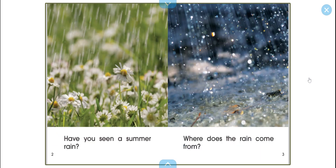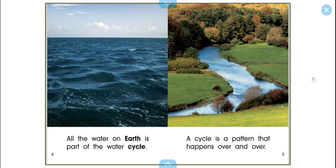Have you seen a summer rain? Where does the rain come from? All the water on Earth is part of the water cycle. A cycle is a pattern that happens over and over.